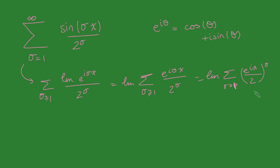Staring at this, we realize it's simply a geometric series, so we can apply our geometric series formula: a divided by 1 minus r. This is the imaginary part of a — the first term, which is e to the ix over 2 — divided by 1 minus r. And 1 minus our common ratio is also e to the ix over 2. Now we simply need to take the imaginary part of this, but first we need to clean this number up a bit.